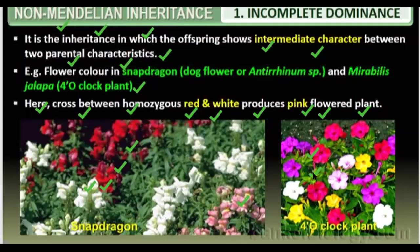But in the case of incomplete dominance, the dominant characteristic does not fully dominate on the recessive, and the recessive characteristic also exhibits itself. The red flower is dominant, the white flower is recessive, but when hybrid formation occurs, we get pink flowers in both cases. These pink flowers are basically due to incomplete dominance, because the red gene is not able to dominate on the white gene.